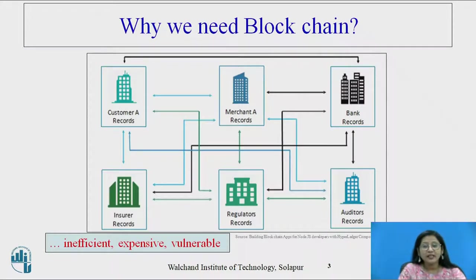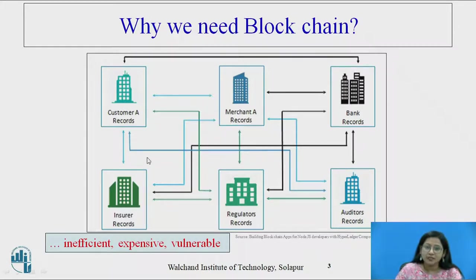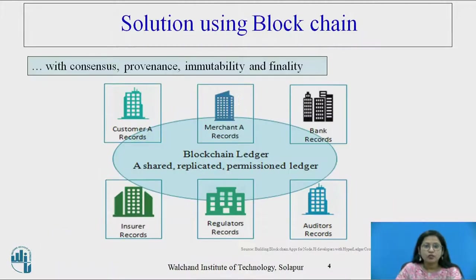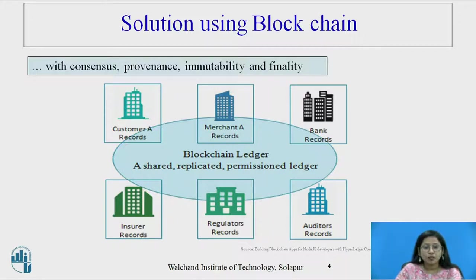Why do we need blockchain? Look at this pictorial representation: customer A's records are available at the bank, the auditor's place, regulatory records also contain customer A's records, and insurer records. Keeping all these records at each and every place is inefficient, expensive, and involves manual labor. Here comes blockchain as a solution. Blockchain ledger is a shared, replicated, permissioned ledger with consensus, provenance, immutability, and finality — no need to keep records at each place; it acts as a distributed ledger.